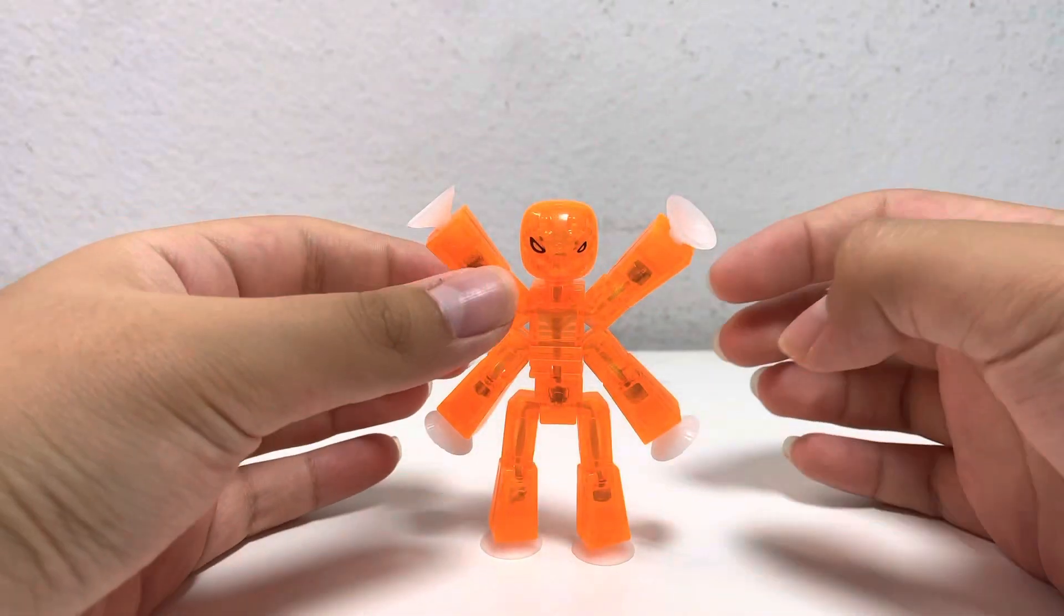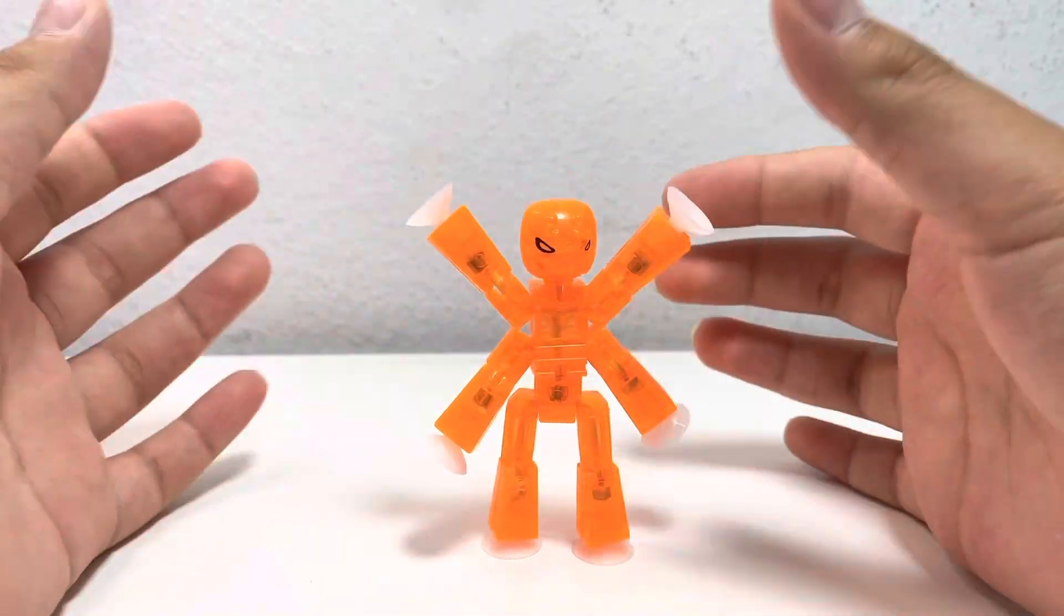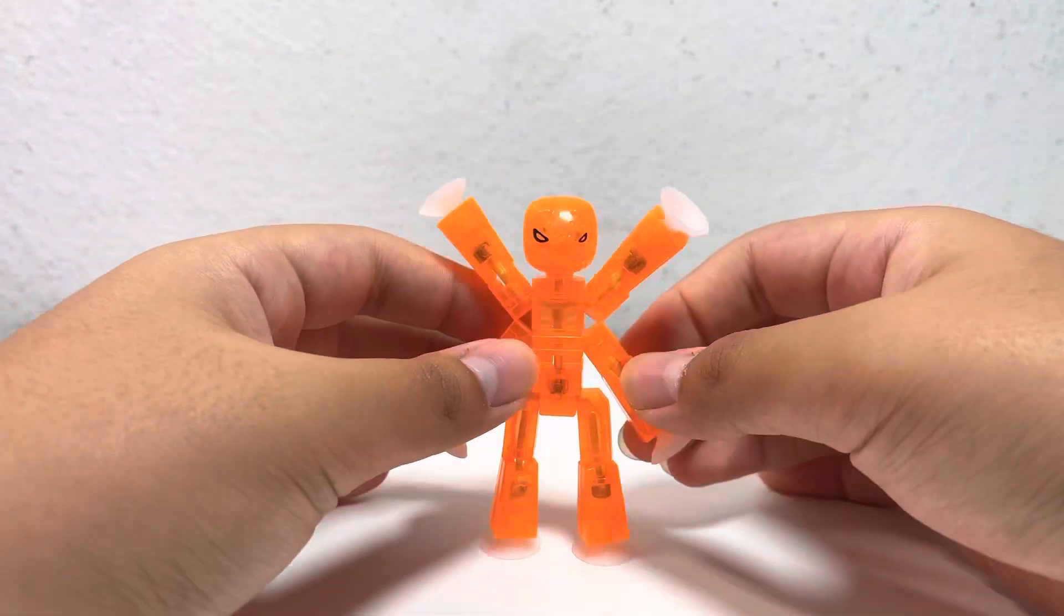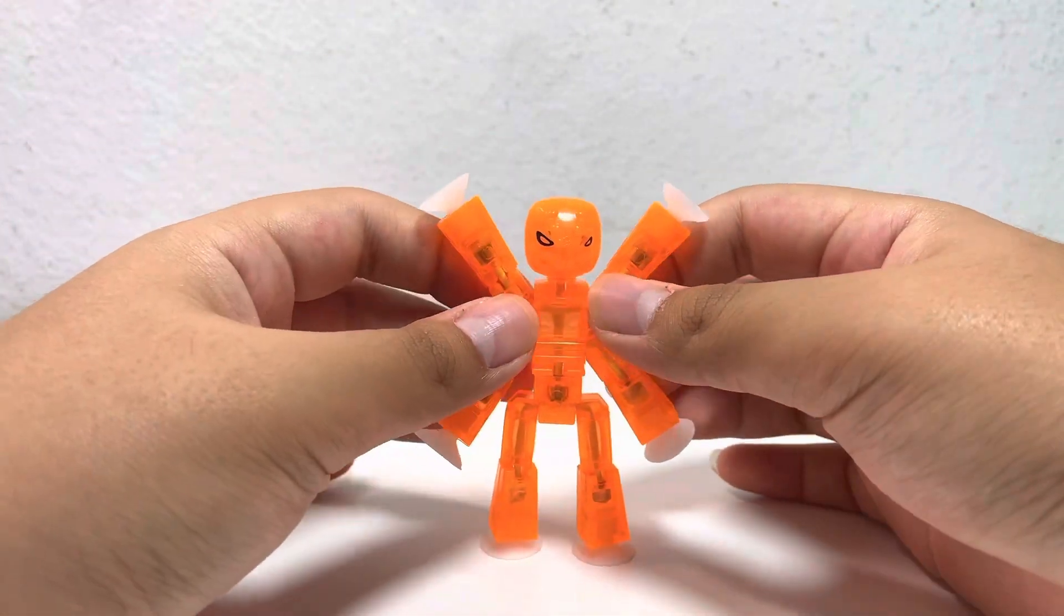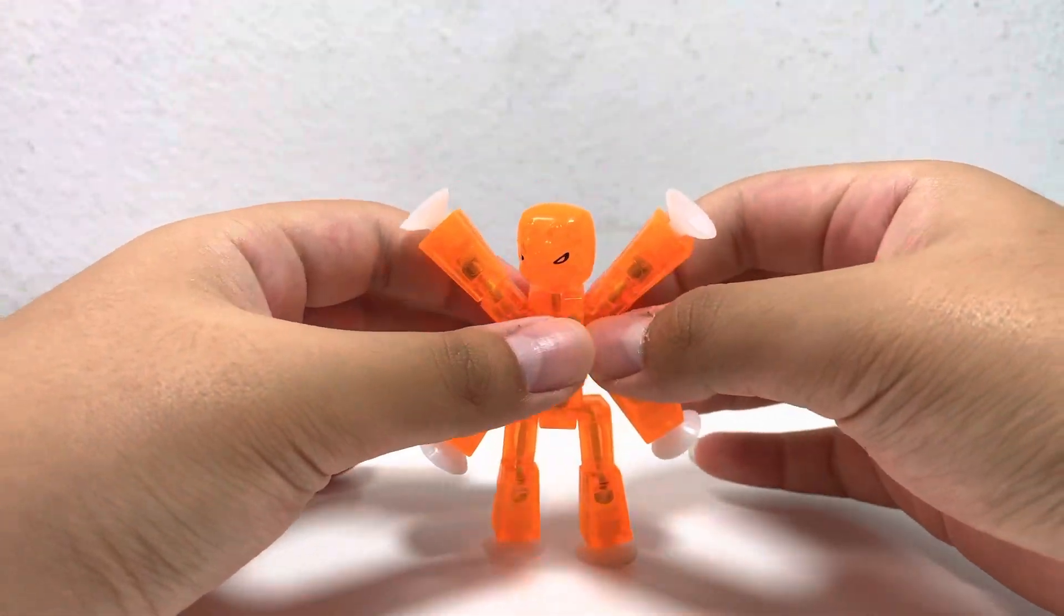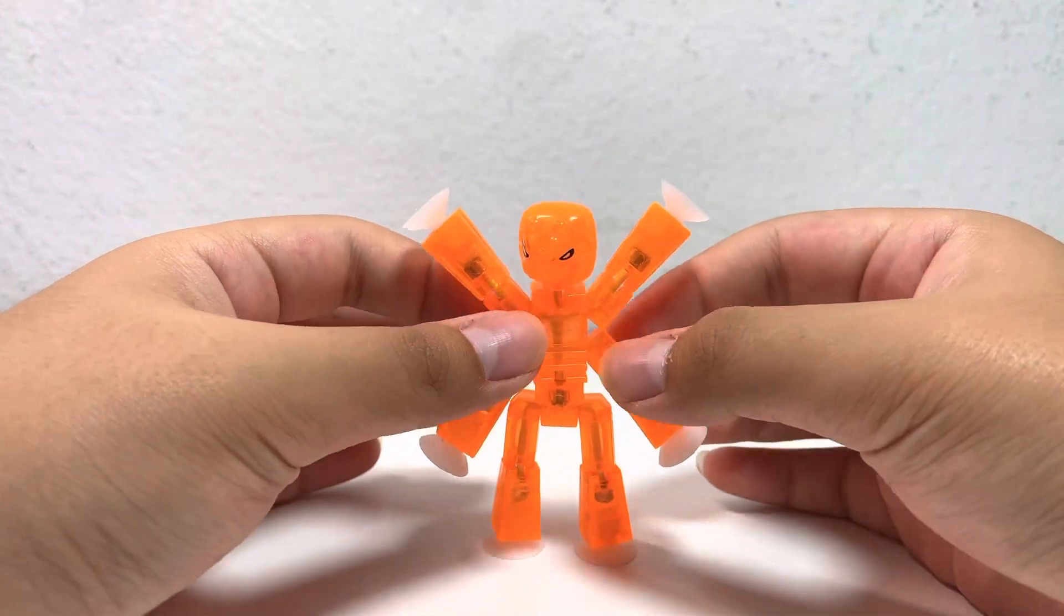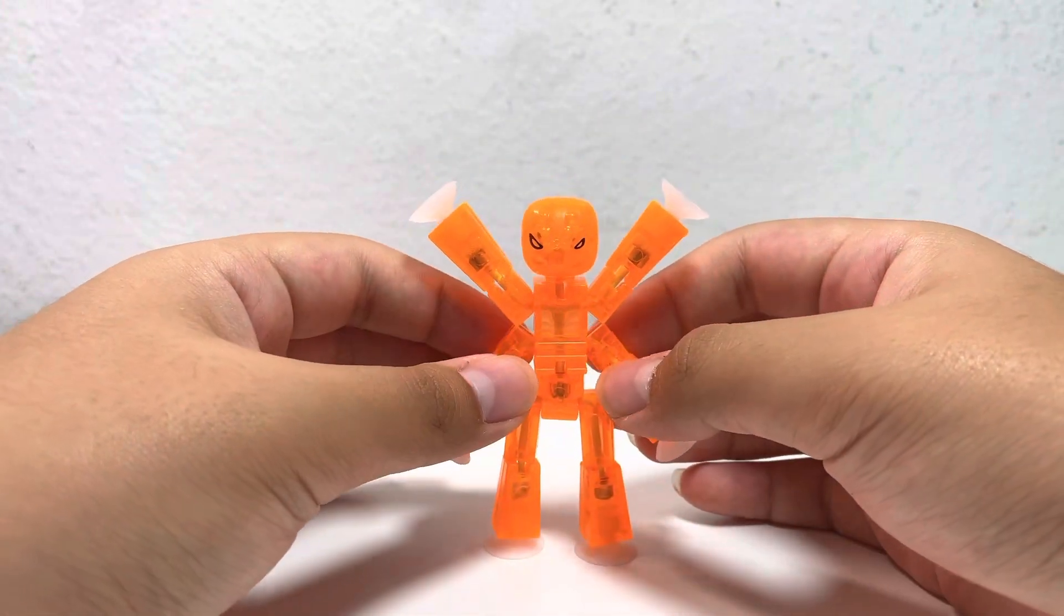So here we have Insector. He's got like four arms or legs. Why are there too many? Anyways, this is the Series 3 Insector I like to call it. You can call it whatever you want, but I like to personally call it the Series 3 Insector.